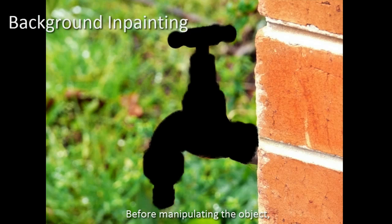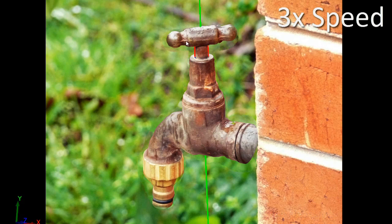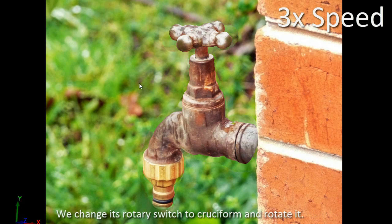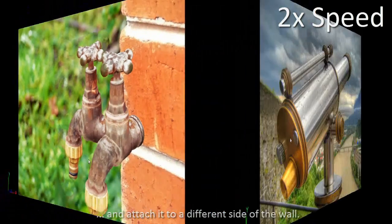Before manipulating the object, the background is completed using the patch match algorithm. We change its rotary switch to cruciform and rotate it. Then we duplicate the tap, rotate it, and attach it to a different side of the wall.